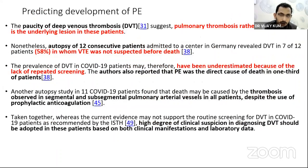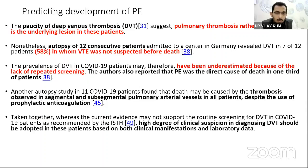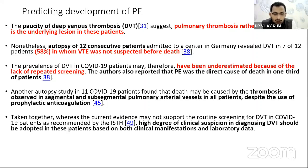Predicting the development of pulmonary embolism is challenging, as DVT is clinically silent in most patients. We need high clinical suspicion to rule in DVT and to suspect pulmonary embolism. Post-mortem studies revealed that 40 to 60 percent of patients had DVT in whom venous thromboembolism was not suspected before death.